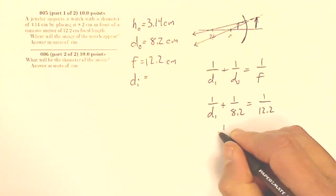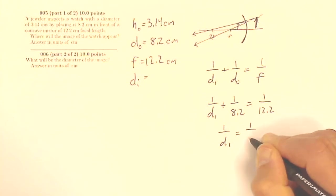So now I see that 1 over di equals 1 over 12.2 minus 1 over 8.2. And if I subtract something with a bigger denominator from something with a smaller denominator, 1 twelfth minus 1 eighth, this is bigger than that. So I'm going to wind up with a negative number here.